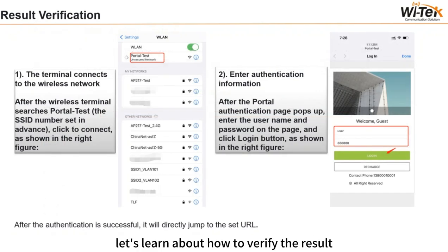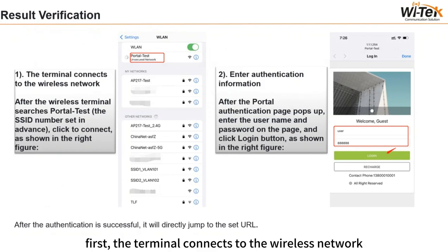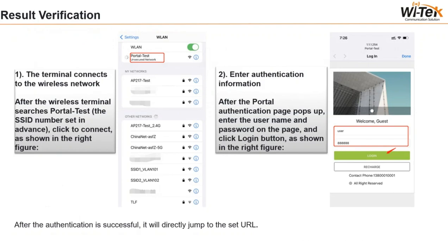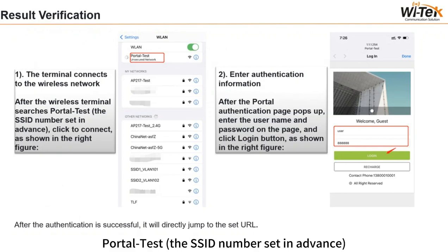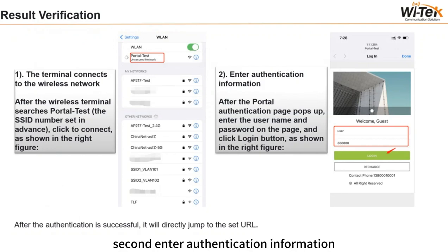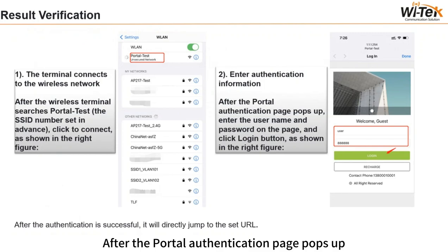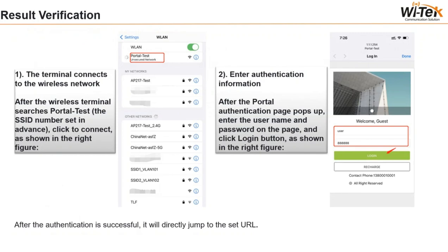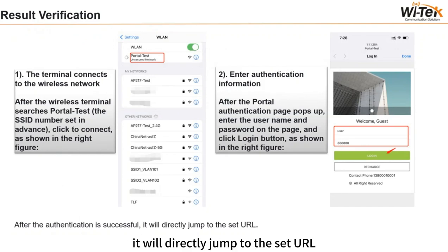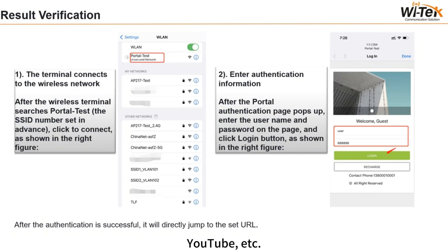Let's learn how to verify the result. First, the terminal connects to the wireless network. After the wireless terminal searches, find the portal test SSID set in advance and click to connect, as shown in the right figure. Second, enter authentication information. After the portal authentication page pops up, enter the username and password and click the login button. After authentication is successful, it will directly jump to the set URL, such as your official website, YouTube, etc.